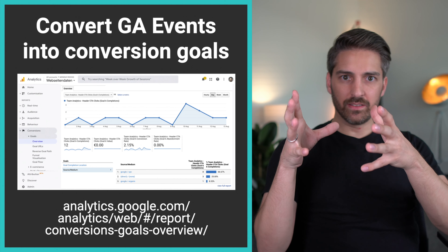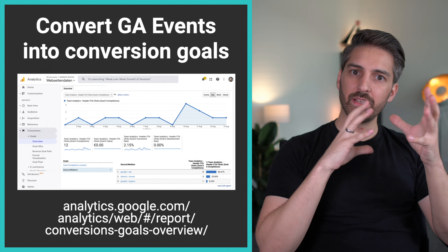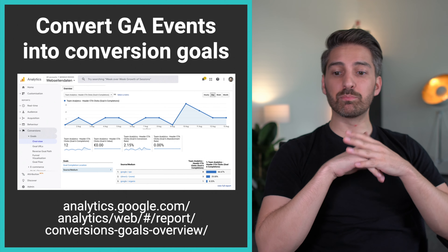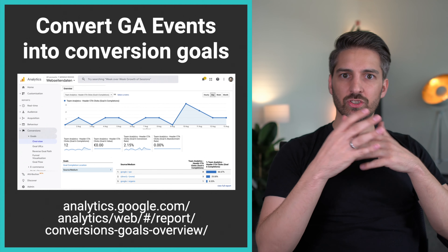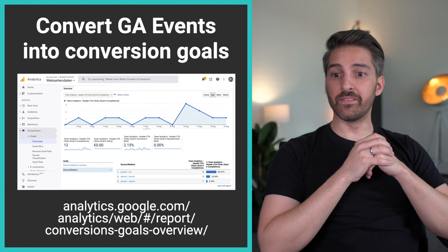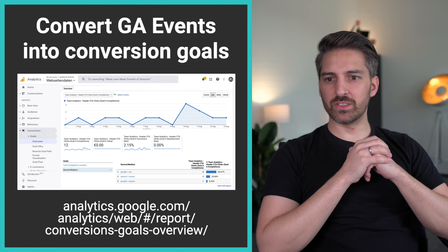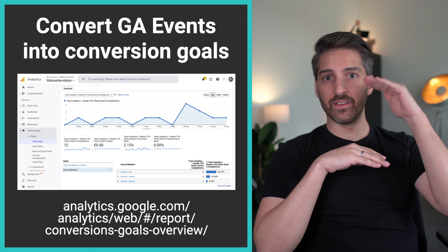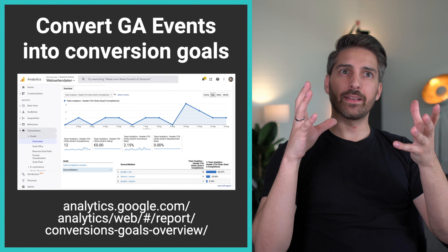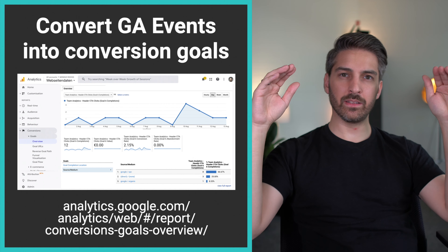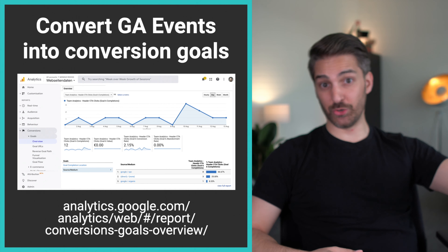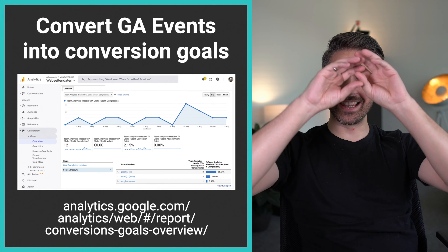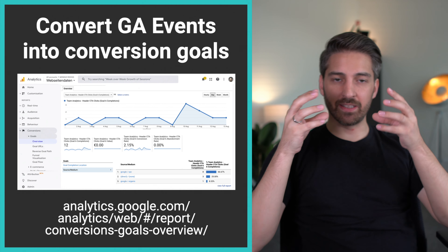Next, take this event and convert it into a goal. We covered creating goals in a previous analytics session. Go to your Goals section, choose to create a goal based on an event, enter the event description just as you configured it in GTM, and you have a Google Analytics conversion goal. The distinction: events are general user behavior tracked in detail, while conversion goals are milestones along the user journey. I prefer a few key conversion goals and many events.